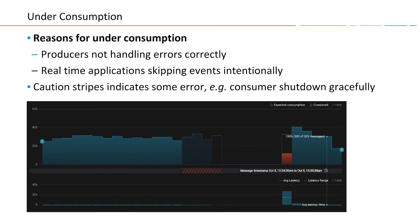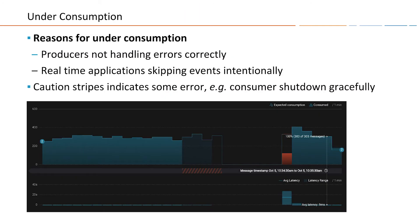Under-consumption happens when more messages are produced than are consumed. This can happen because producers are not handling errors correctly and they do not retry — producers think they sent messages, but messages never arrive to Kafka and consumers never saw them. The other reason for under-consumption is that consumers skipped ahead to catch up with real-time messages and chose not to read some messages in the workflow. If you look at the screen, you can see gaps of data and red bars indicating that more messages were produced than consumed.